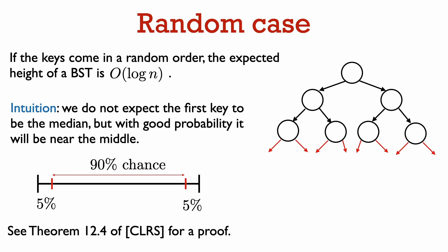It takes some more work to formalize these ideas into a proof that the expected height of a binary search tree when the keys are inserted randomly is order log n, and we won't go into the details here. A proof of this can be found in theorem 12.4 of the book Introduction to Algorithms by Cormen, Leiserson, Rivest, and Stein.